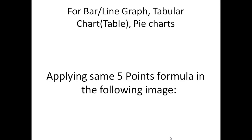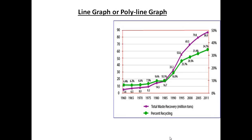Now let's implement all five points of the formula on a polyline graph. As you can clearly see, this is a polyline graph with many values. But remember, we only have 40 seconds to record, so we are not going to go through each and every value. That is the reason for the five-point formula. We start with the name: it is a polyline graph.